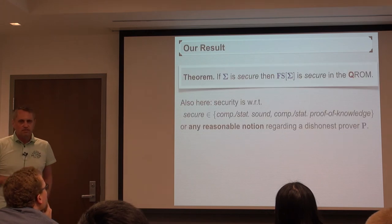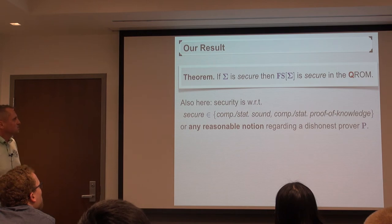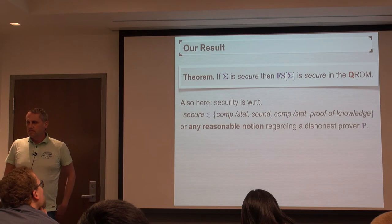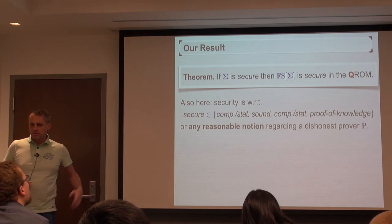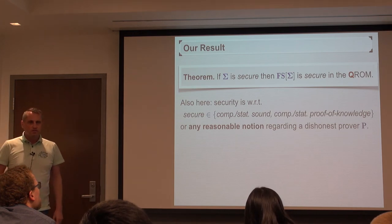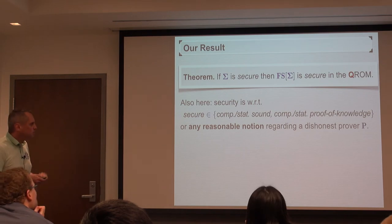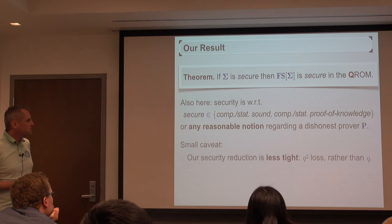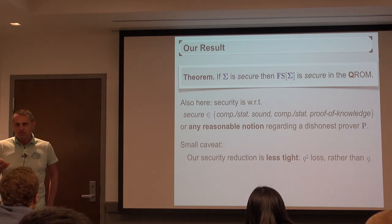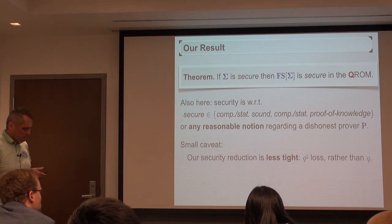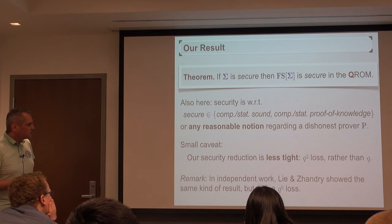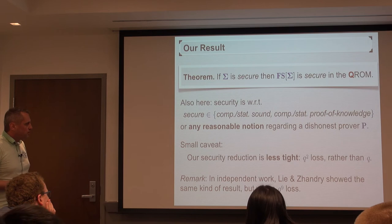What was known: Dominic Unruh showed there exists another transformation that remains secure but is less efficient than Fiat-Shamir. He also showed that if the sigma protocol is statistically sound, then the Fiat-Shamir transformation is at least computationally sound — but this is a degradation from statistical to computational soundness. There was no positive result for proof of knowledge, and there have been some negative claims in the literature. Our result shows these negative claims are not true: if the sigma protocol is secure, then the Fiat-Shamir transformation is secure as well in the quantum random oracle model. A small caveat is that our reduction loses a factor quadratic in Q rather than linear.